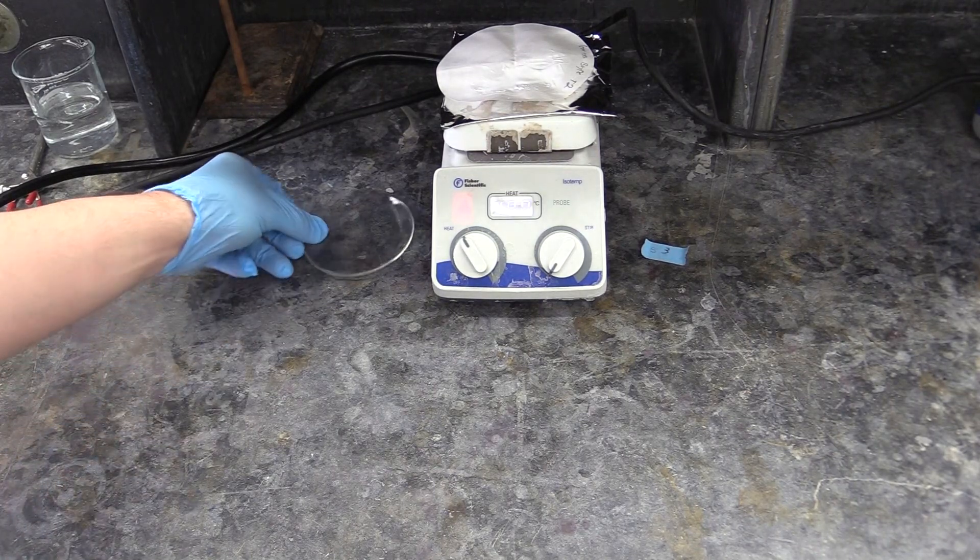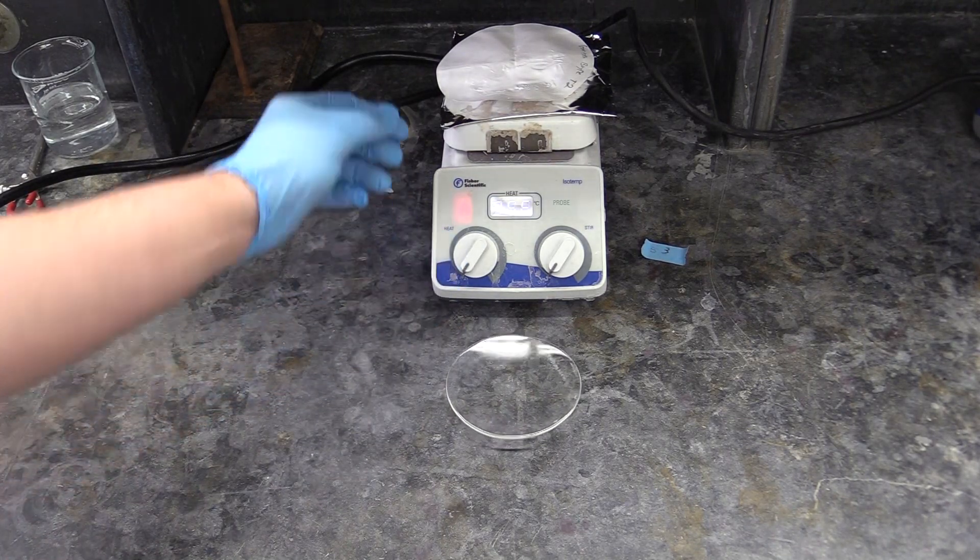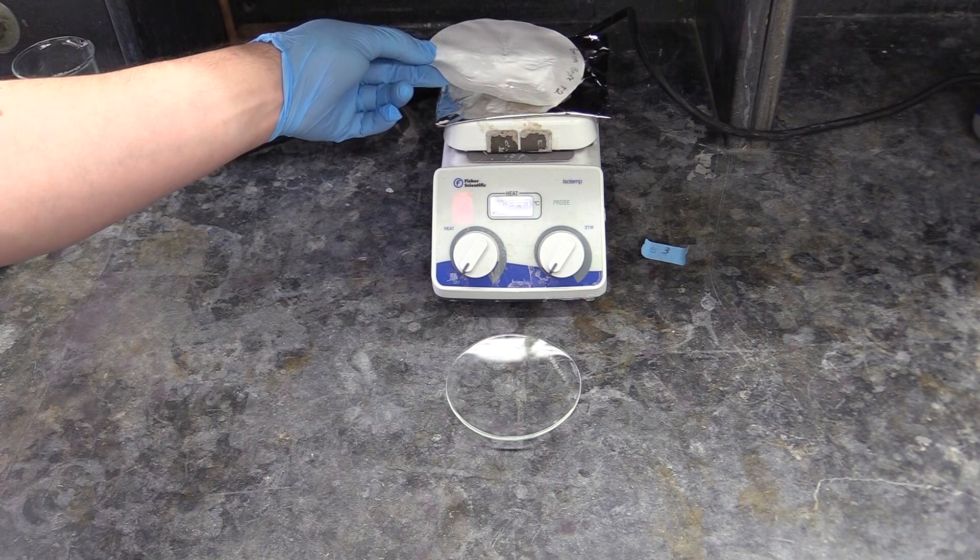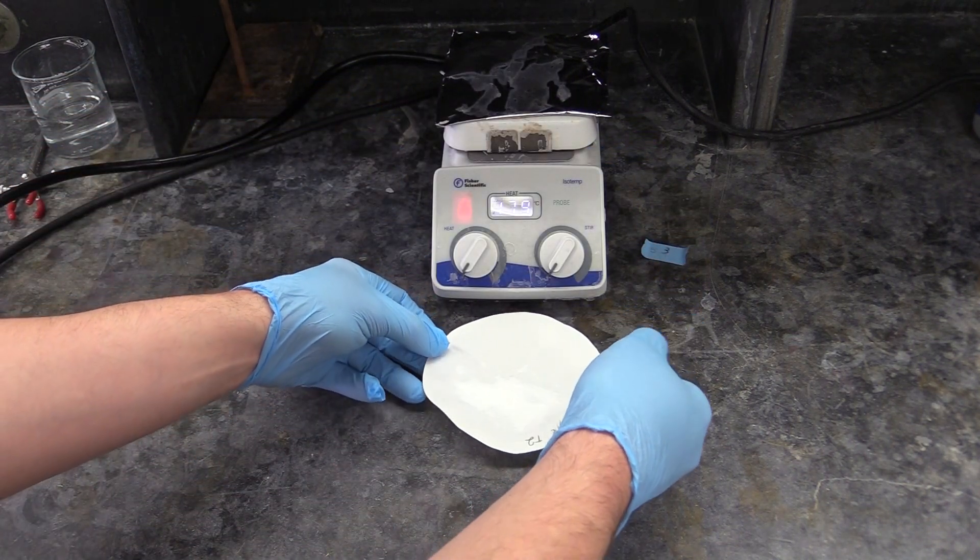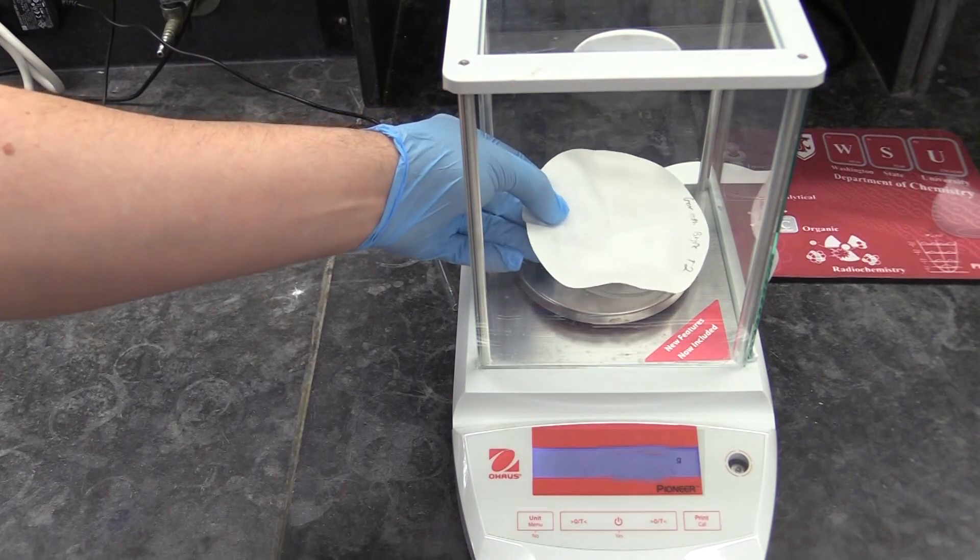Going back to the filter papers, the last thing we need to do to them is check them to make sure they're dry and take their final mass with the dry precipitate. Put each paper on the same watch glass you weighed it on earlier, then carry it to the scale and weigh it.